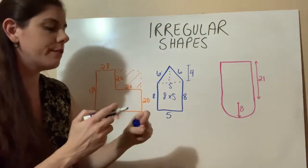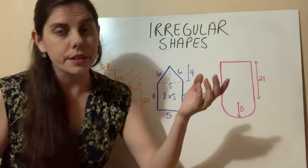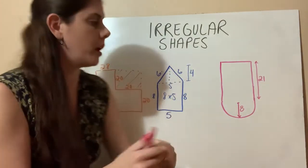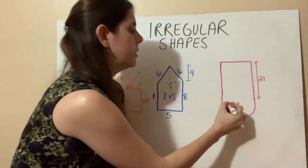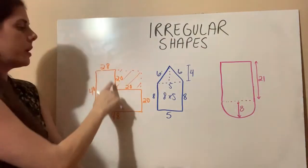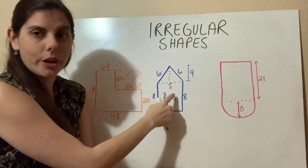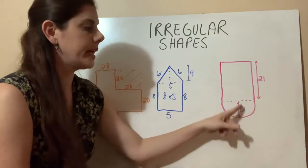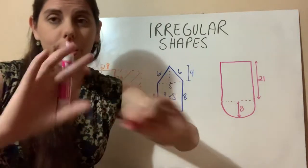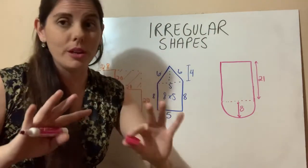The same thing for our last shape, which can be a little bit trickier because now we're dealing with a circle and a rectangle. The first thing you want to do is identify which shapes you're working with. In this one we're working with two rectangles; in this one, a rectangle and a triangle; and in this one, a rectangle and a circle. Identify the shapes so you know what formulas you're going to be using.